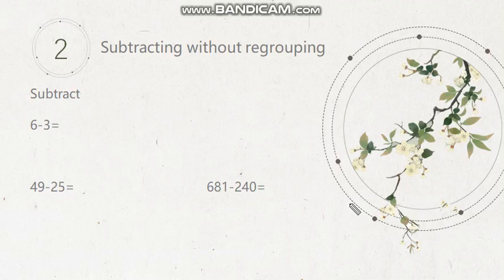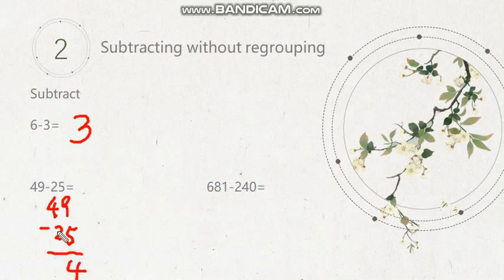So our new topic is subtracting without regrouping. We'll talk about the regroup later. But let's look at these. 6 minus 3. That's easy. That gives us 3. And 49 minus 25. Let's put it in the vertical form. Don't forget, we still have to work from the back. So 9 minus 5. That's a 4. 4 minus 2. It's a 2. So your answer will be 24.